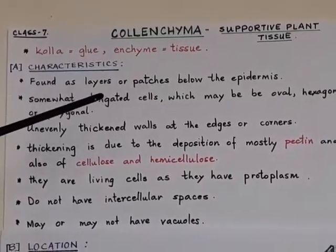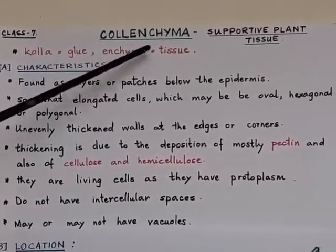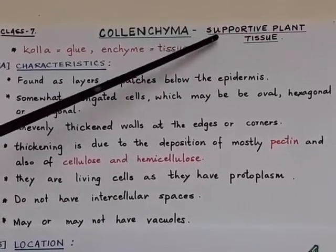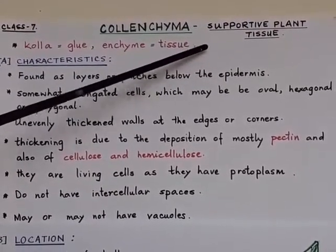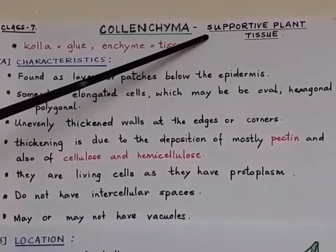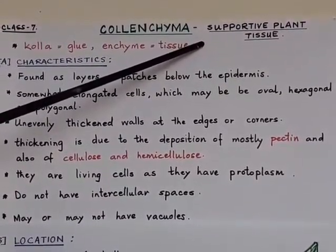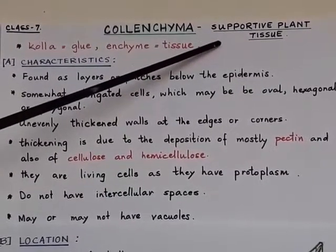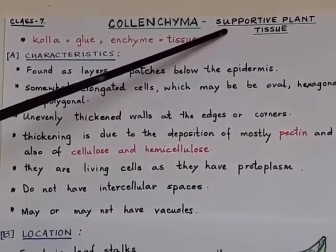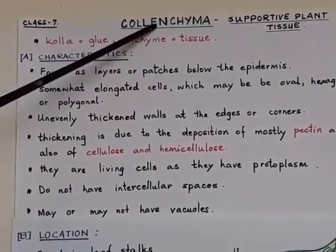In the previous video, students of class 7, we did the first type of supportive plant tissue which was parenchyma, and today we will be doing the second type of supportive plant tissue which is colenchyma.